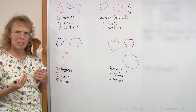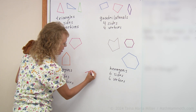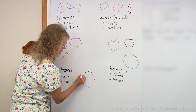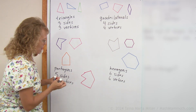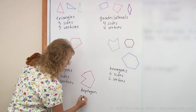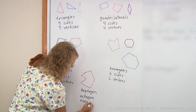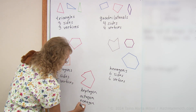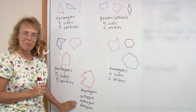Now what about a shape with seven sides? Let me try to draw one — one, two, three, four, five, six, and seven, something like that. It's a heptagon. And then if it has eight sides, it is an octagon. Nine sides would be a nonagon. All these -gon endings refer to the word for angle or corner in Greek. And ten sides is a decagon. So a bunch of shapes!